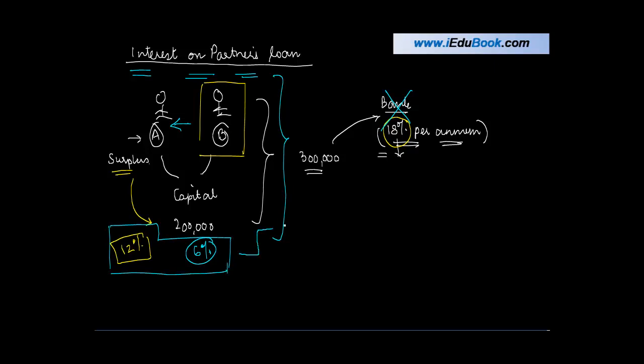So whether it is a charge to the profit and loss account? Or is it a charge to the profit and loss appropriation account? And therefore, a partner, namely A, is entitled to such interest even though there are no profits. No profits?